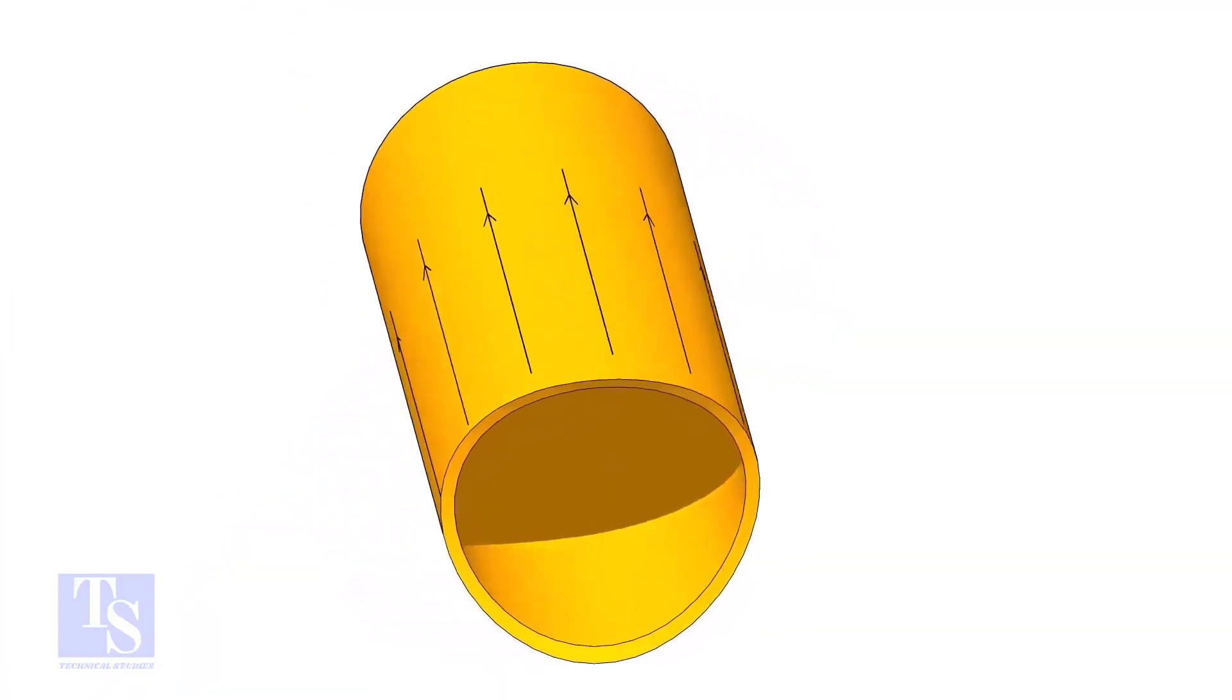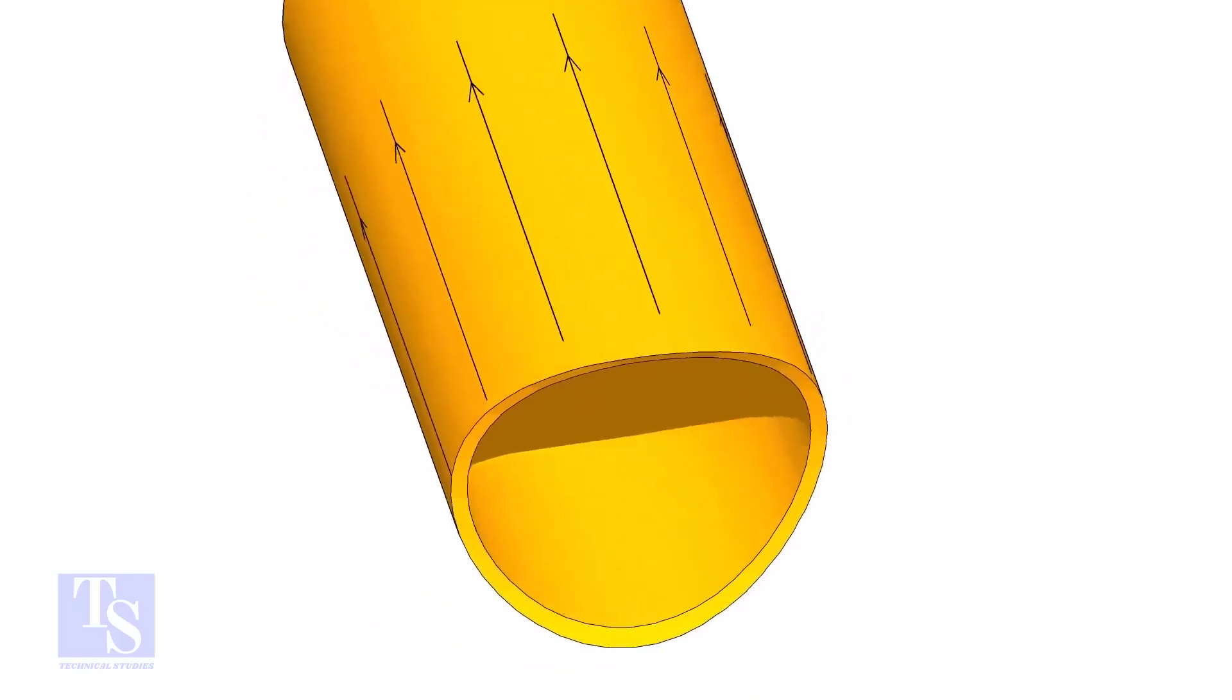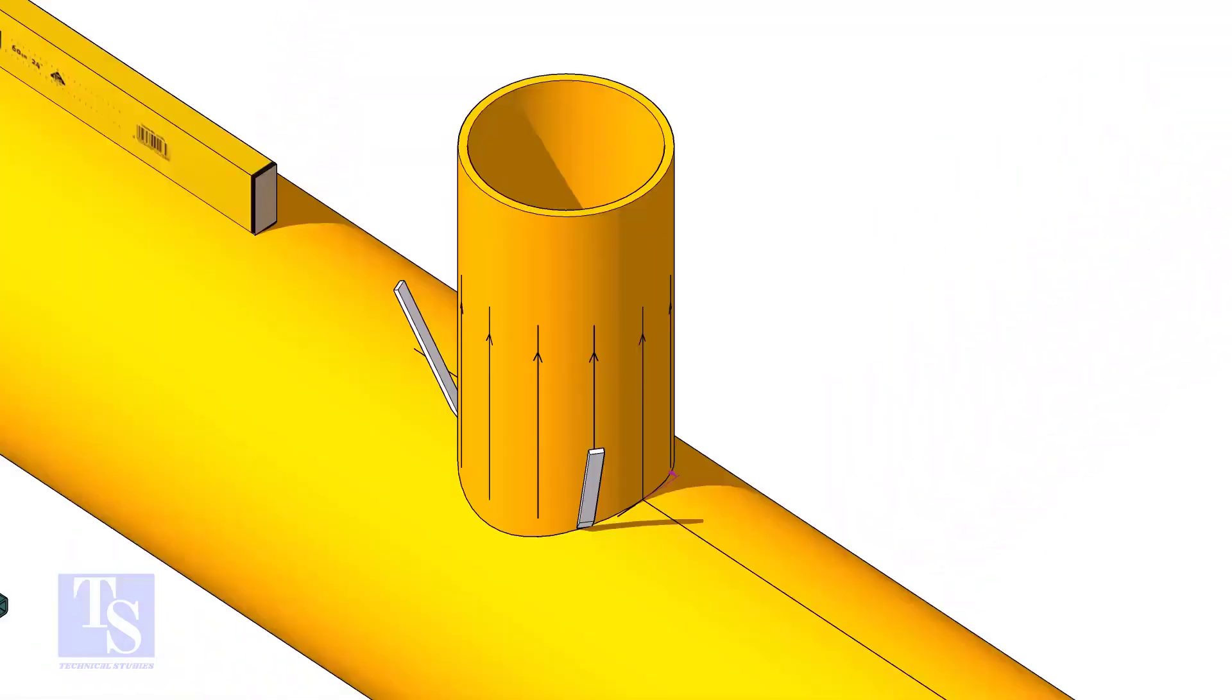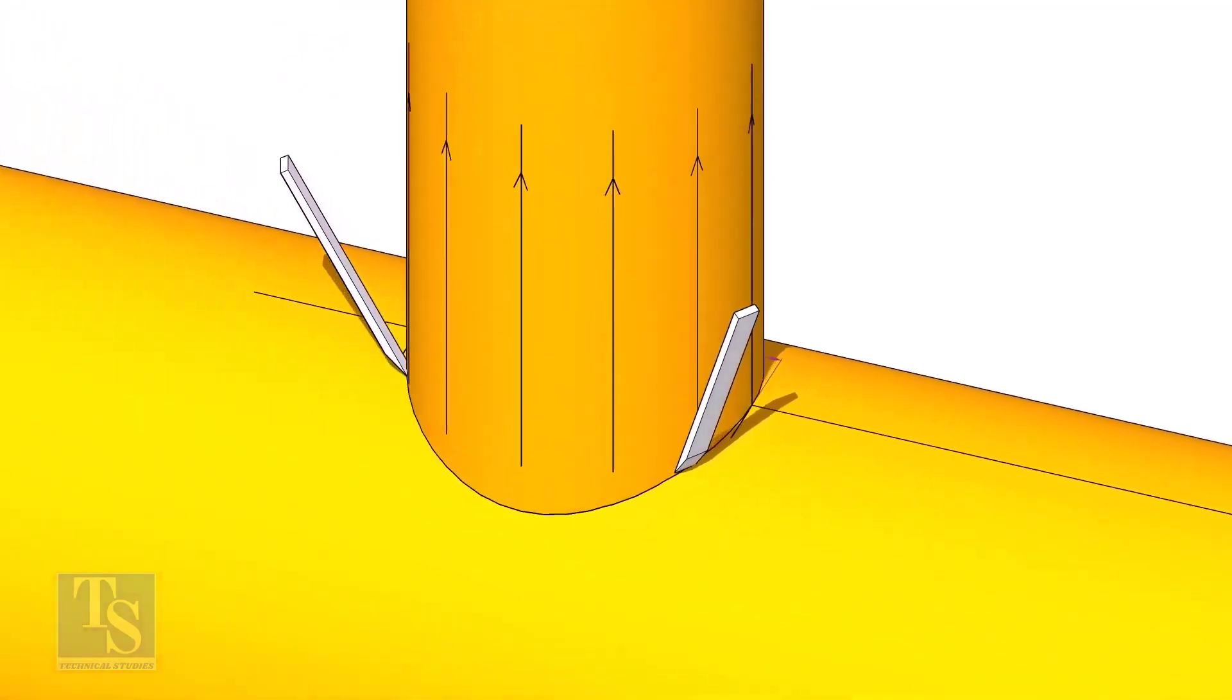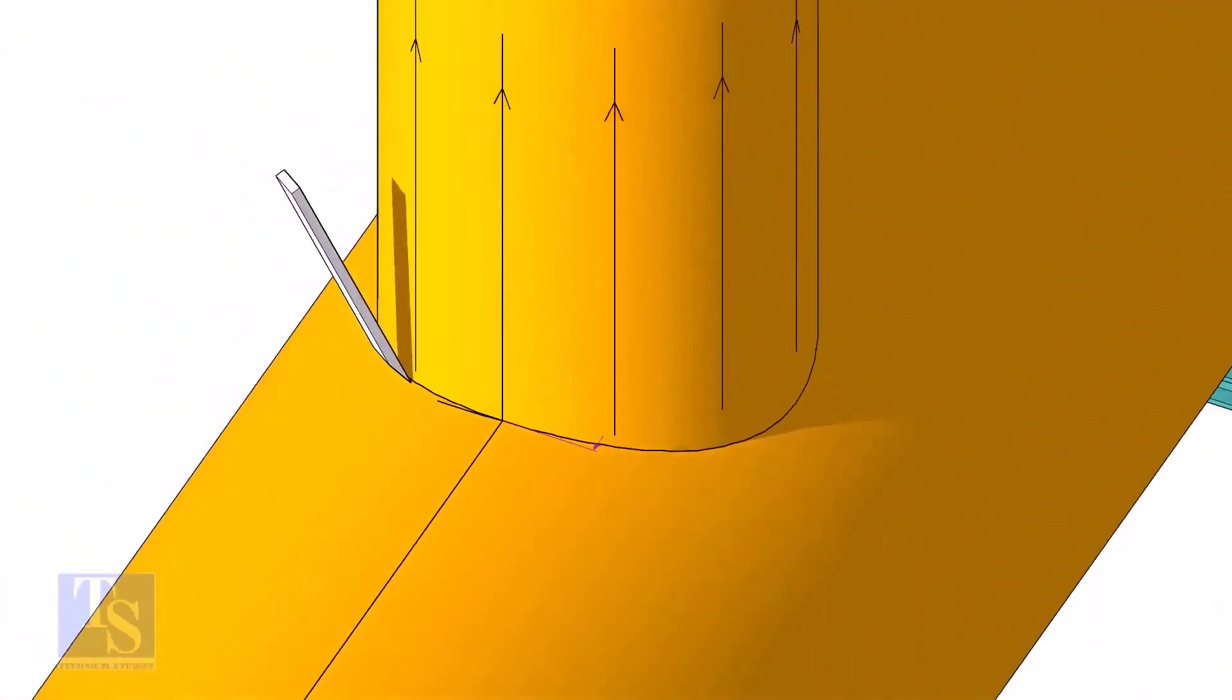After cutting and grinding the notch on the branch pipe, put it on the header. Make sure it is exactly in its position and mark the opening on the header as shown.